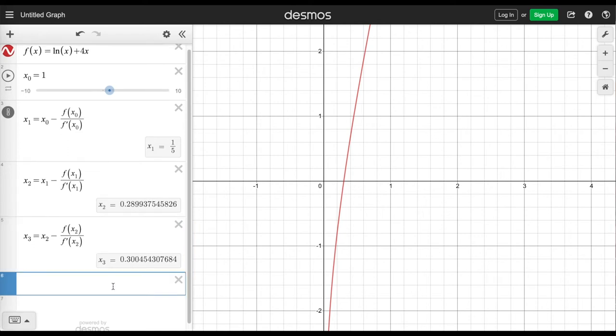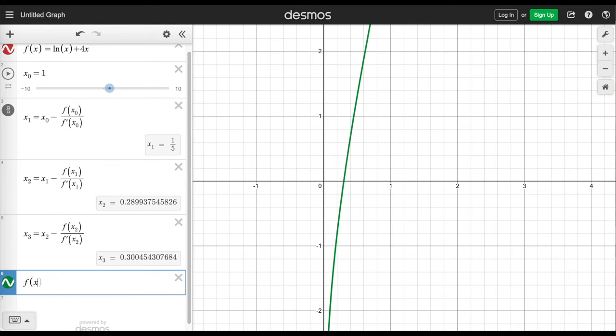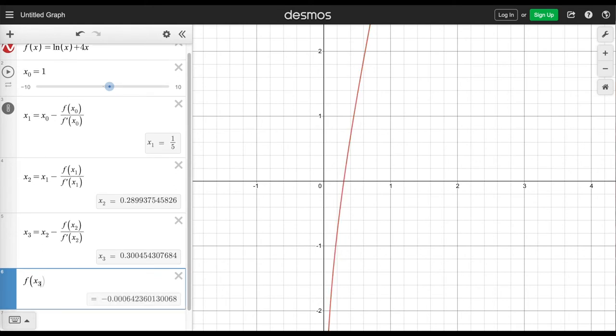So now we can also go ahead and check how accurate this estimate is. We can say, what's f of x3? Well, that comes out to negative 0.00064, which as you talked about, is already super small. This is like the order of 1 in 10,000. It's a really small number. So that tells us that x3 is a pretty good approximation for what our zero would be.